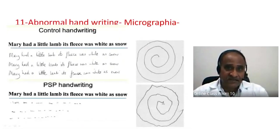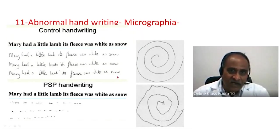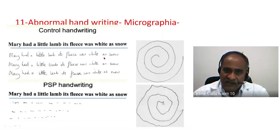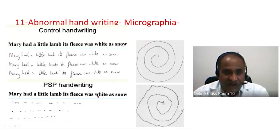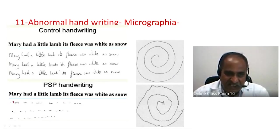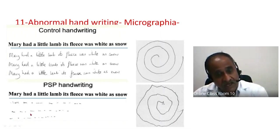Abnormal handwriting is called micrographia. A normal person's handwriting is consistent — 'Mary had a little lamb, its fleece was white as snow' — written uniformly. A Parkinson's patient starts large but letters progressively become smaller and smaller, and by the second or third attempt have become much smaller. When asked to draw a spiral, a Parkinson's patient cannot do it smoothly because of tremors.